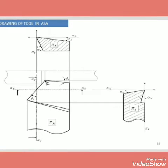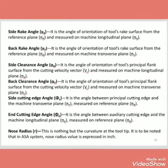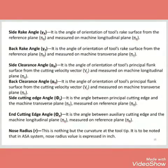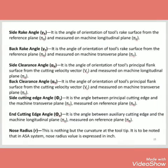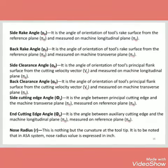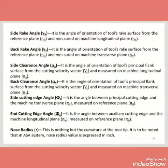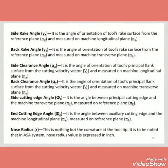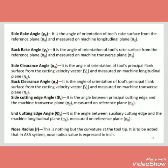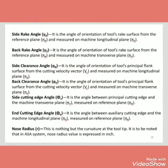A drawing of the tool in the ASA system is shown. The side rake angle is denoted by pi-x, and is the angle of orientation of the tool's rake surface from the reference plane, measured on the machining longitudinal plane. The back rake angle is the angle of orientation of the tool's rake surface from the reference plane, measured on the machining transverse plane. The side clearance angle is the angle of orientation of the tool's principal flank surface from the cutting velocity vector, denoted by V_c, and measured on the machining longitudinal plane.